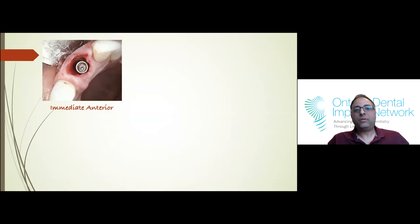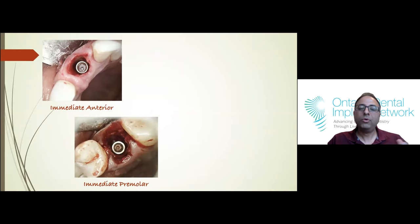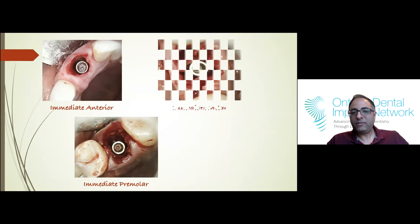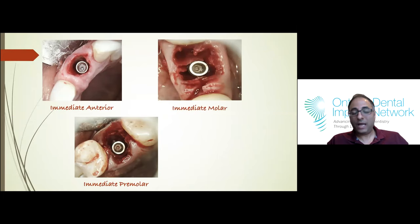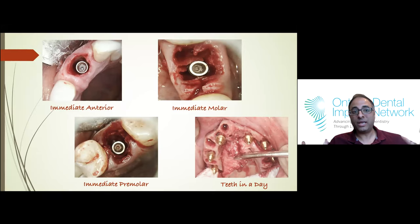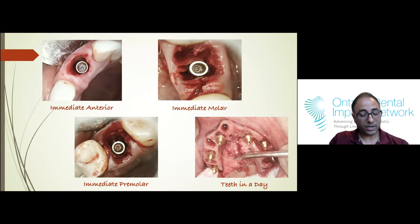Here's an example of what we're going to talk about today — the immediate anterior: removing the anterior tooth and placing the implant the same day, and in some cases depending on your level of expertise, fabricating a tooth the same day. The same goes with immediate premolar. For first premolars, I typically tend to make the tooth the same day. And then of course moving and transitioning to something like a full arch, where we're removing all the teeth and in many cases placing implants and the patient leaving with a set of teeth the same day. Those are very life-changing procedures.